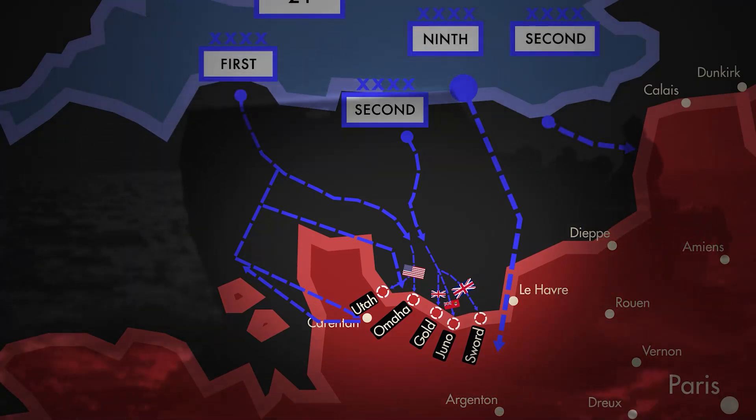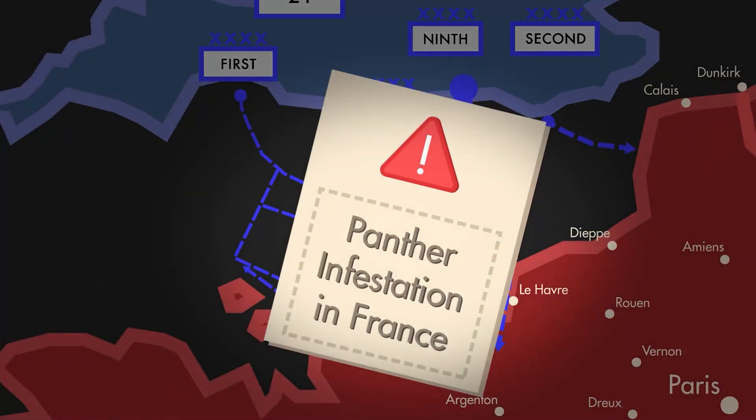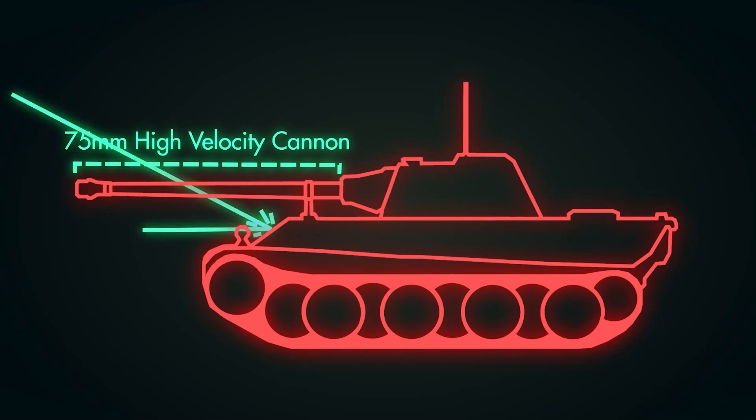But Allied command had received troubling intelligence reports, saying that there were significantly more German Panther tanks than initially anticipated. The Panther sported a high-velocity 75mm cannon, one of the most powerful of World War II, and front armor that couldn't be penetrated by the M4 Shermans that made up much of the US tank force.